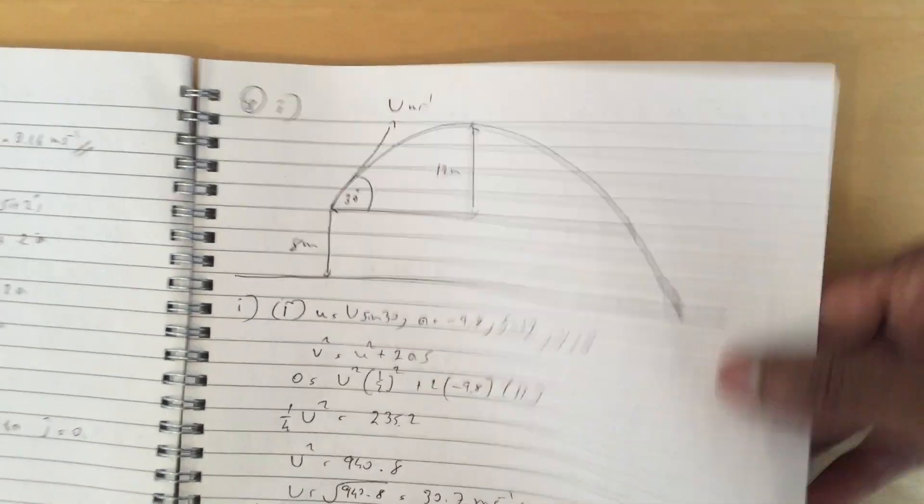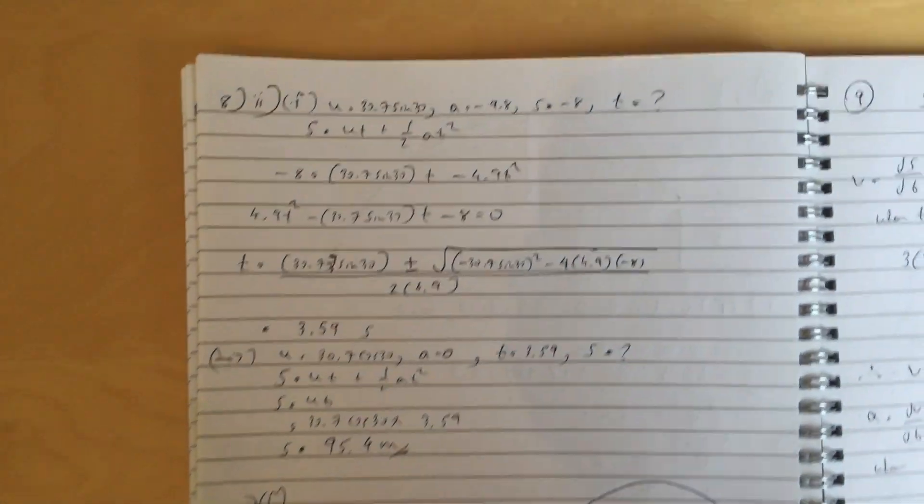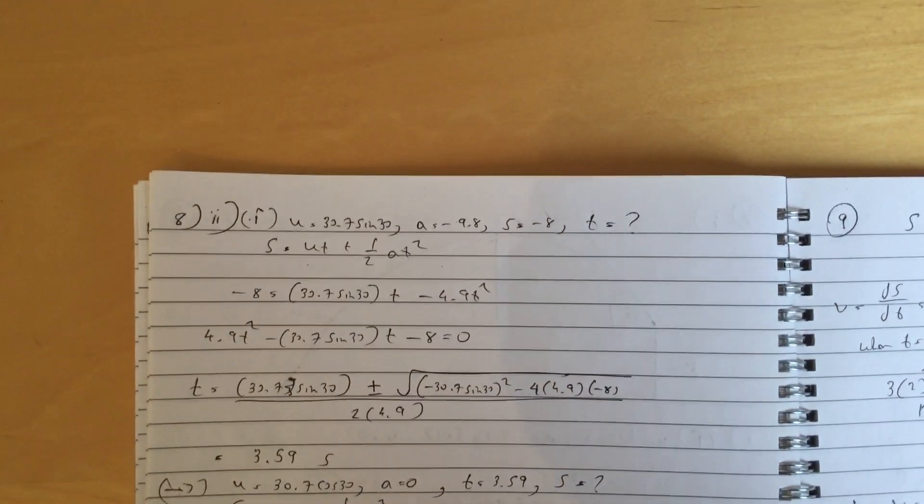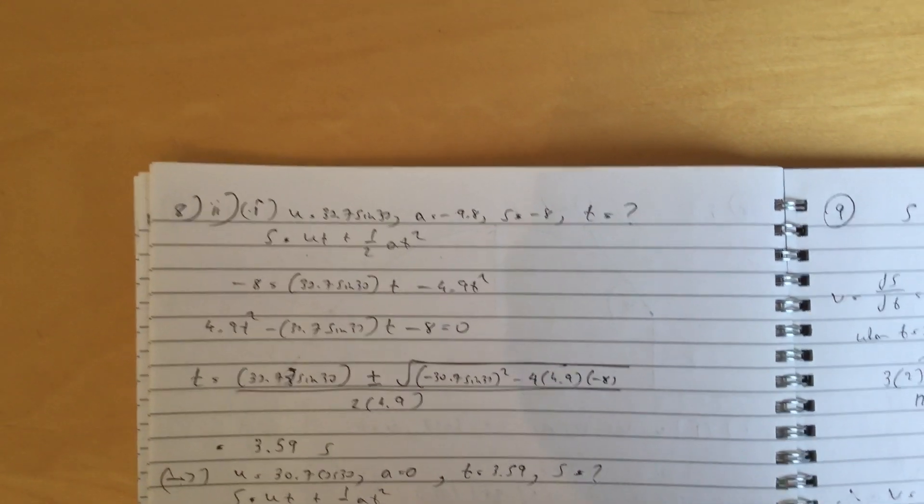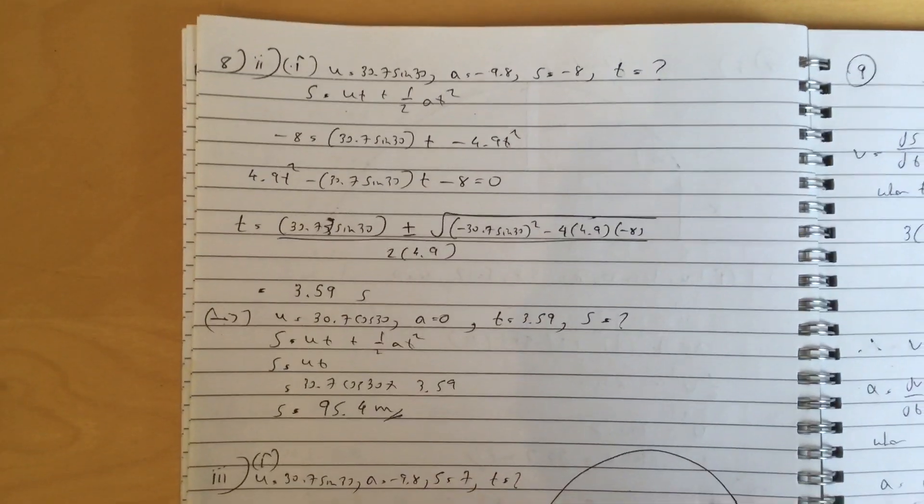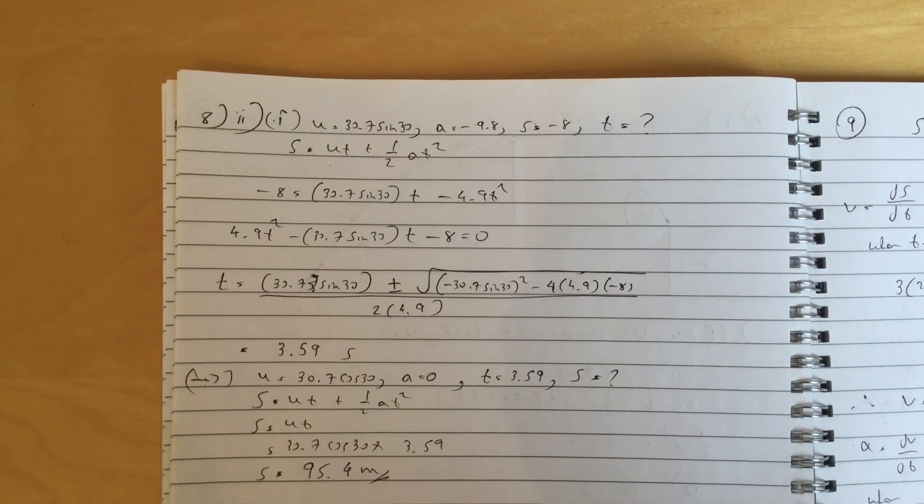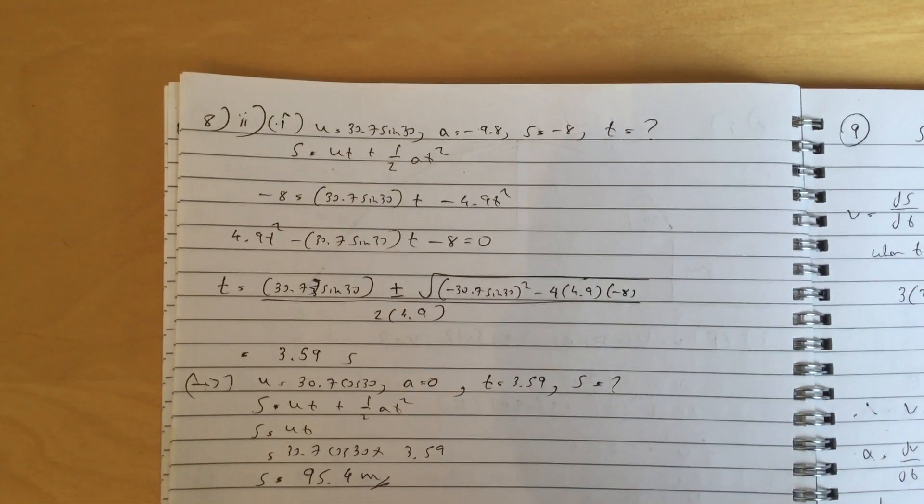To get part 2, you first of all resolve vertically and put s as minus 8, work out the time taken which is 3.59 seconds, and then use that time and resolve horizontally, and then work out the horizontal distance which is 95.4 meters.